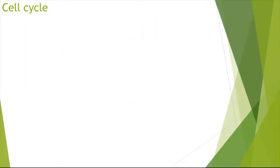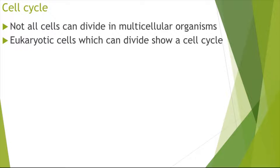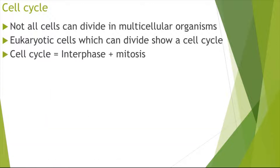First, looking at the cell cycle itself. Not all cells can divide in multicellular organisms. For example, our red blood cells can't divide and our white blood cells can't divide. But the eukaryotic cells which can divide would show a cell cycle — a pattern we call a cell cycle. Cell cycle is interphase plus mitosis. Some people confuse cell cycle with mitosis, but cell cycle is both interphase and mitosis combined. Interphase takes up most of the time spent in the cell cycle, and then we have a small proportion spent in mitosis.